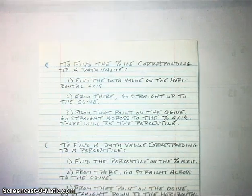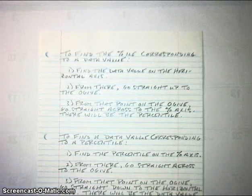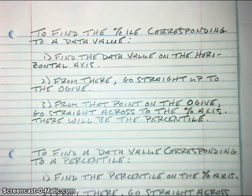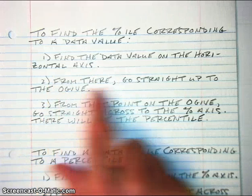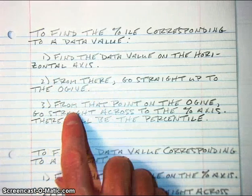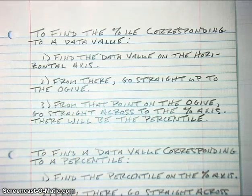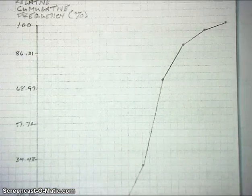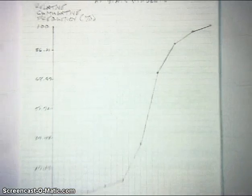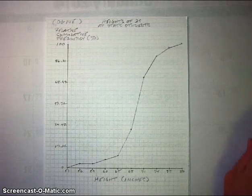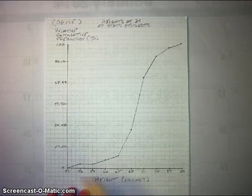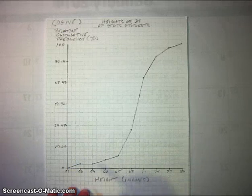Here's the general basic procedure. If you want to find the percentile corresponding to a data value, find the data value on the horizontal axis of the ogive. From there, go straight up to the ogive, and then from that point on the ogive, go straight across to the percent axis — that is where your percentile will be. In this picture, you can find a data value on the horizontal axis, go up to the ogive, and then go straight across to find your percentile.